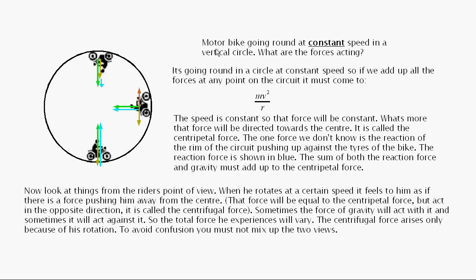Now let's have a look at this little example here. What we've got is a vertical track and a motorbike going around it at a constant speed. It's going around in a circle at constant speed, so if you add all the forces at any point on the circuit, it must come to mv² over r. The speed is constant so that force will be constant. What's more, that force is directed towards the centre. It's called the centripetal force.